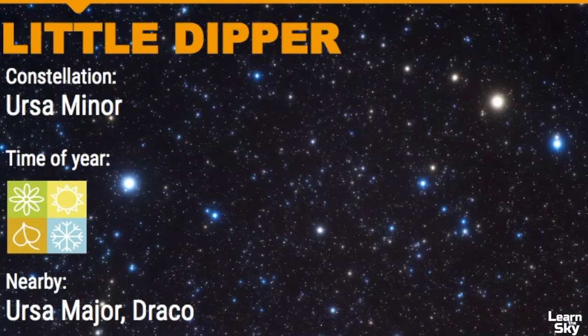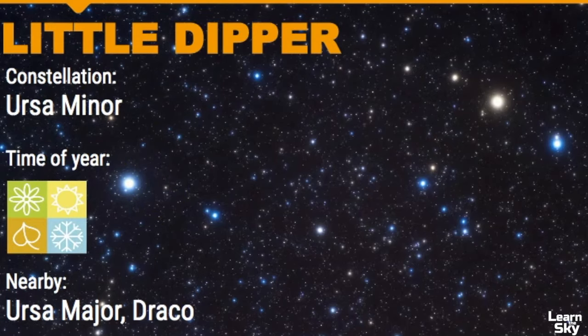This constellation is important because it contains Polaris, the North Star — the star that doesn't appear to move in the sky because it's oriented over the north celestial pole.